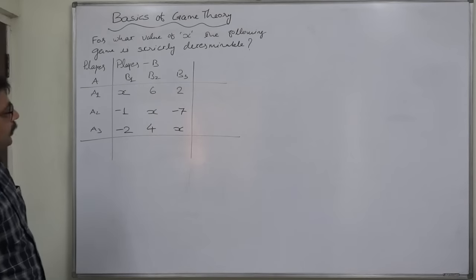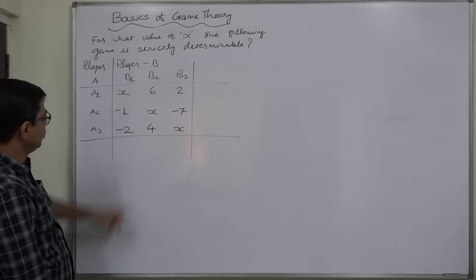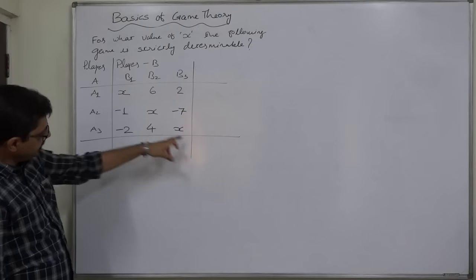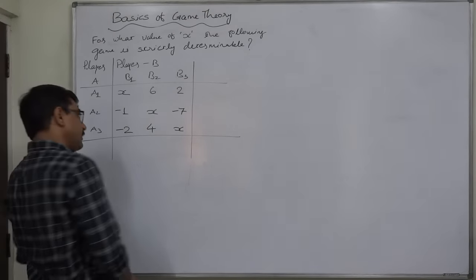The question is for what value of X the following game is strictly determinable. The value of X appears in all three columns and rows. For what value of X can the game be strictly determinable?